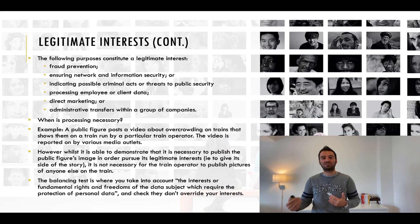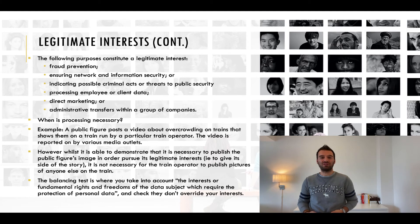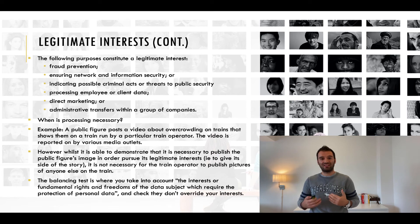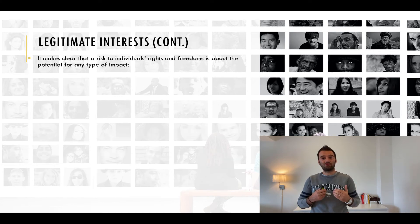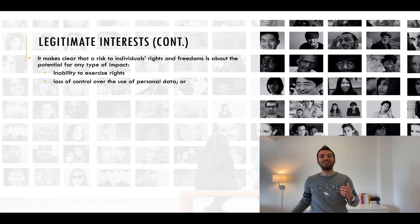The balancing test is where you take into account the interests or fundamental rights and freedoms of the data subject which require the protection of personal data, and check they don't override your interests. In essence, this is a light-touch risk assessment to check that any risks to individual interests are proportionate. The interests, rights and freedoms of individuals in this context is a broad concept which includes data protection and privacy rights but also other fundamental rights as well as more general interests. It is clear from other related provisions in the GDPR that the focus should be on any potential impact on individuals. Recital 75 provides relevant guidance here, making clear that the risk to individuals' rights and freedoms includes physical, financial or any other impact — such as inability to exercise rights, loss of control over the use of personal data, or any social or economic disadvantage.